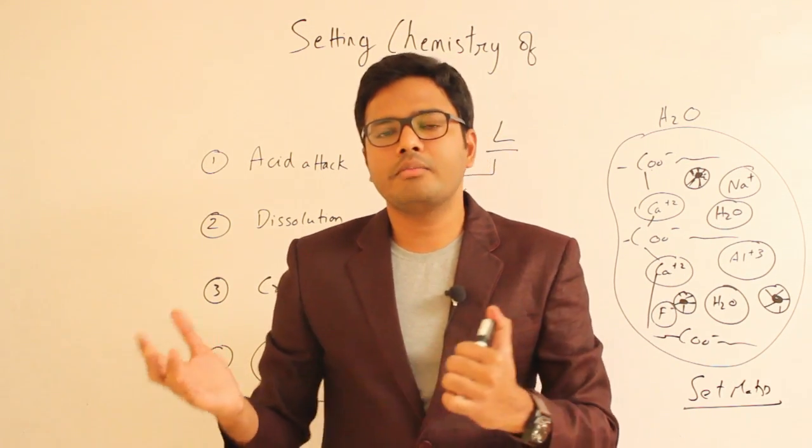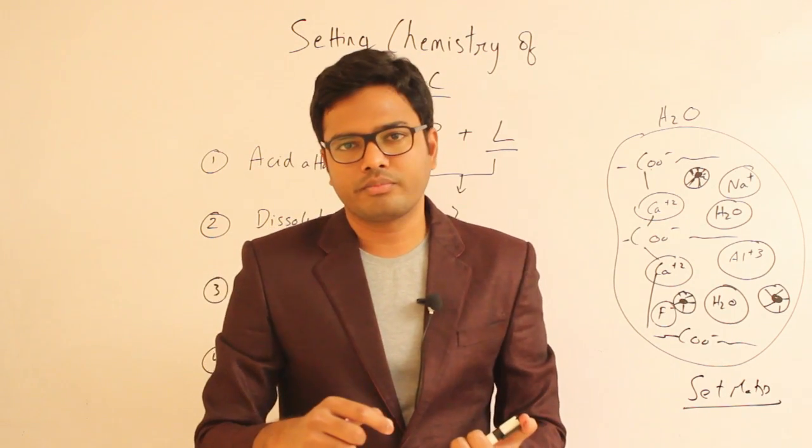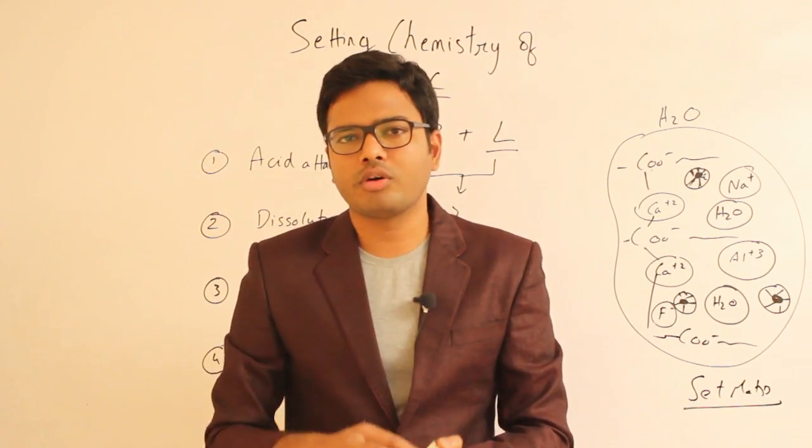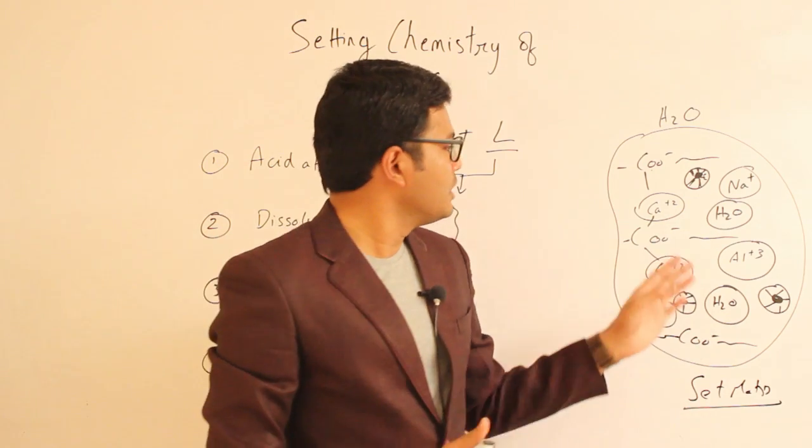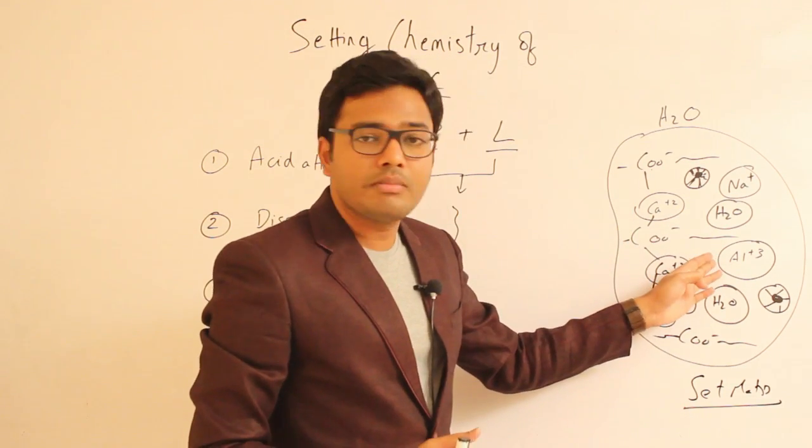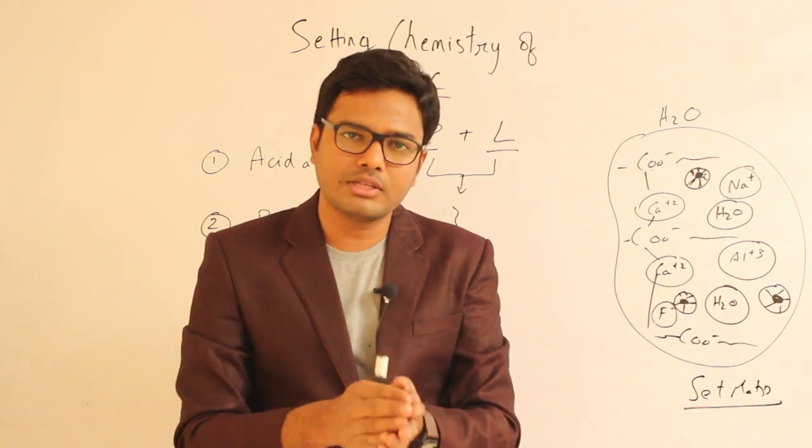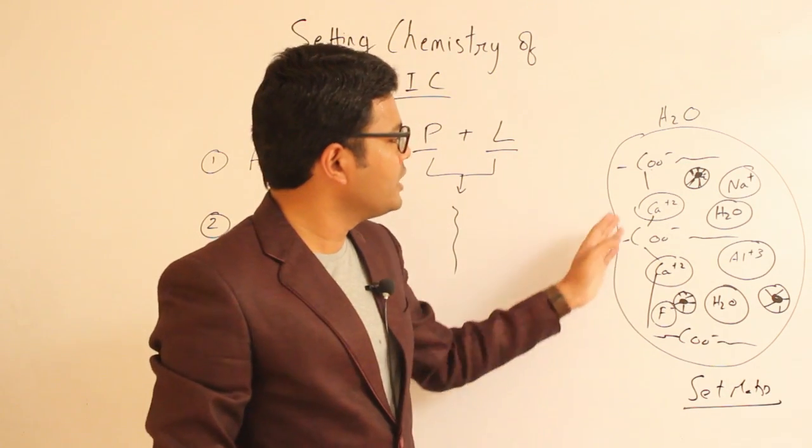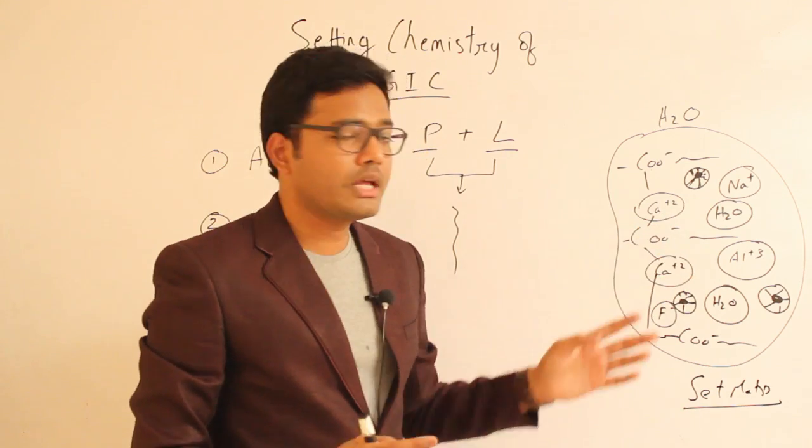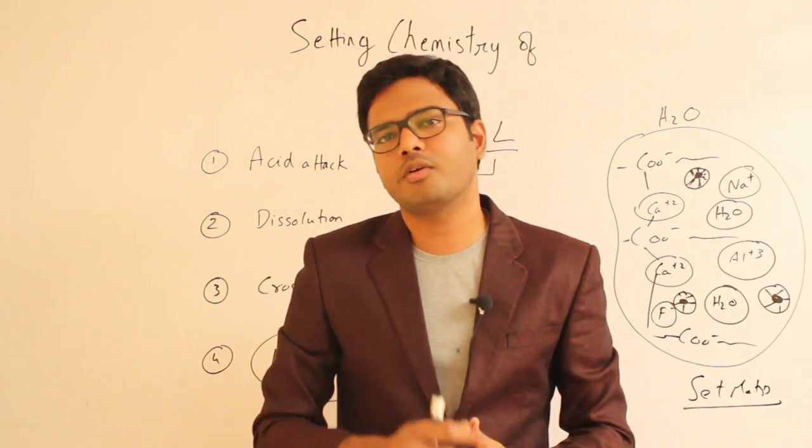On the other hand, when there is contamination of this set cement with water, there will be leaching of various calcium and aluminum ions. These are matrix-forming ions. Contamination of the cement with water can cause leaching of these very important ions, thereby compromising the integrity of the set cement.